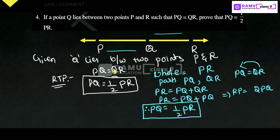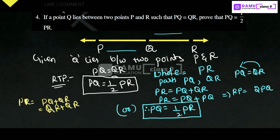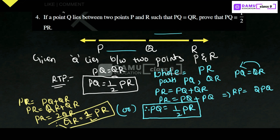Alternatively: PR equals PQ plus QR. Substituting PQ in place of QR, we get PR equals 2 QR, so QR equals one-half of PR. Thanks for watching, please subscribe.